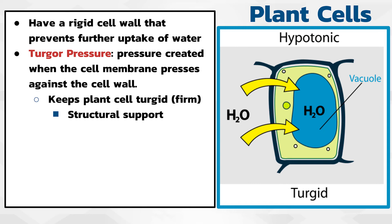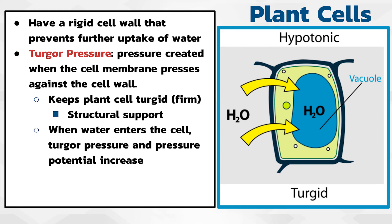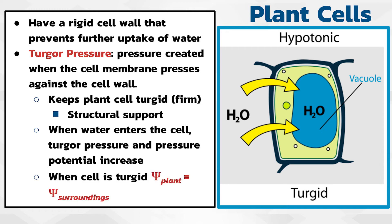What we're really interested in with turgor pressure is its relationship to water potential. As water enters the cell, the positive turgor pressure increases, and the pressure potential increases as a result, which raises the overall water potential of the cell, since water potential equals solute potential plus pressure potential. The pressure potential builds until the cell has the same water potential as its surroundings and is at equilibrium with them. At this point, there is no net movement of water in or out of the cell.